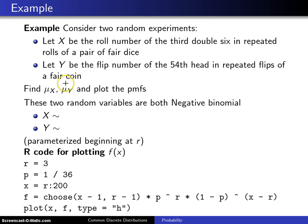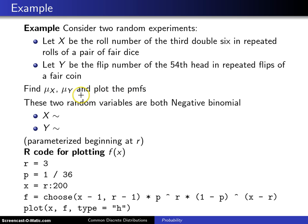We would like to find mu sub X, the population mean of X, and mu sub Y, the population mean of Y, and a plot of the two probability mass functions of the two random variables to see how they compare.